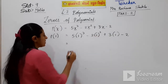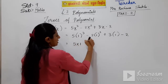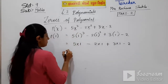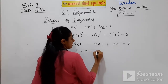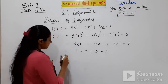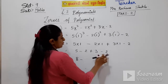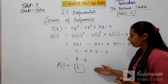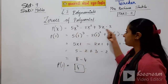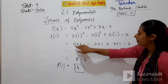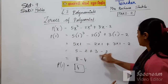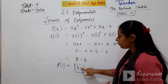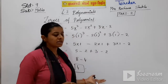Now solve the sum. 5 into 1 cube is 5 into 1, minus 2 into 1 square is 2, plus 3 into 1 is 3, minus 2. So 5 ones are 5, 2 ones are 2, 3 ones are 3, minus 2. Now 5 plus 3 is 8, minus 2 minus 2 is minus 4, and 8 minus 4 is 4. So you got the answer as 4. Solve this sum in your example book.